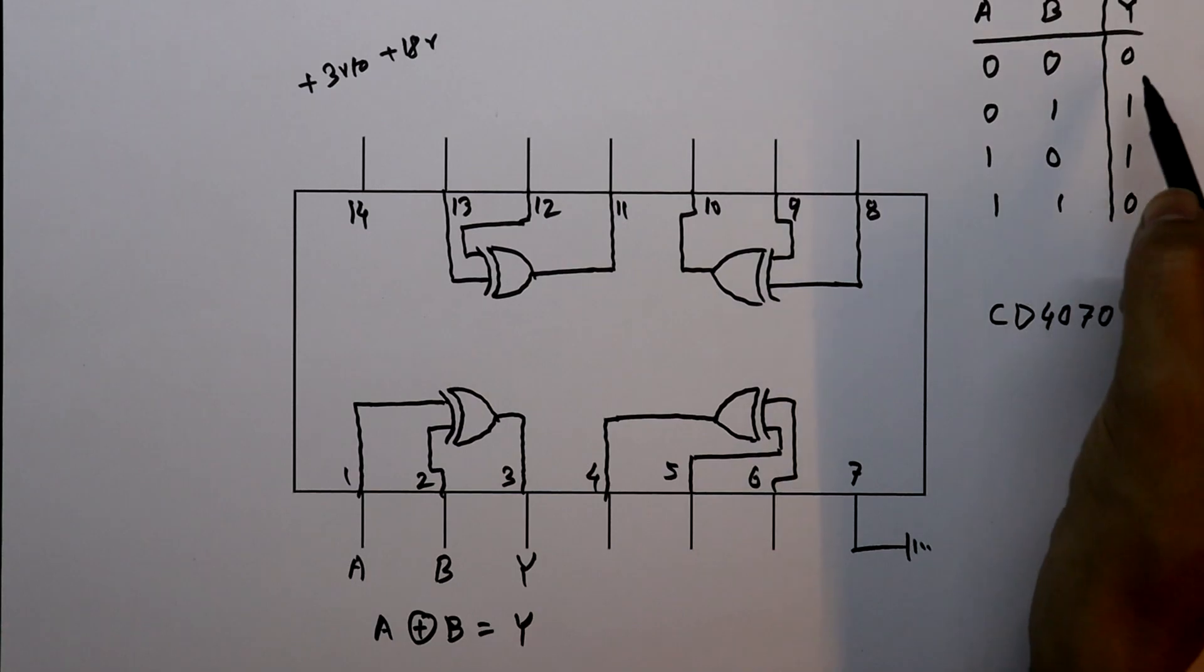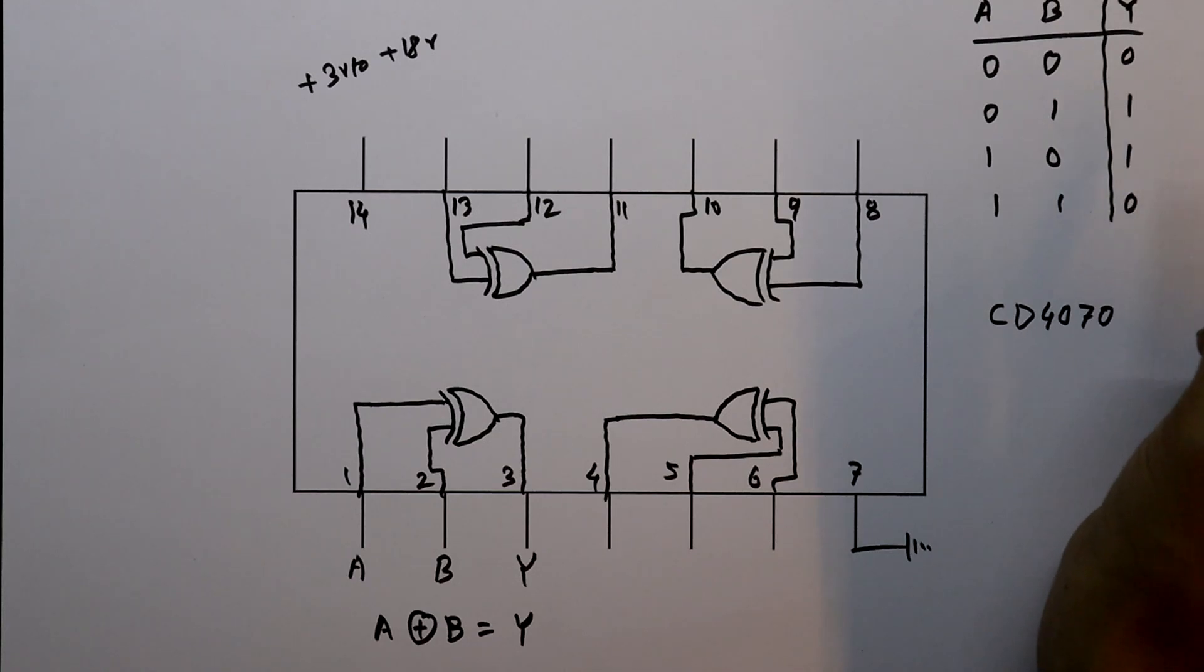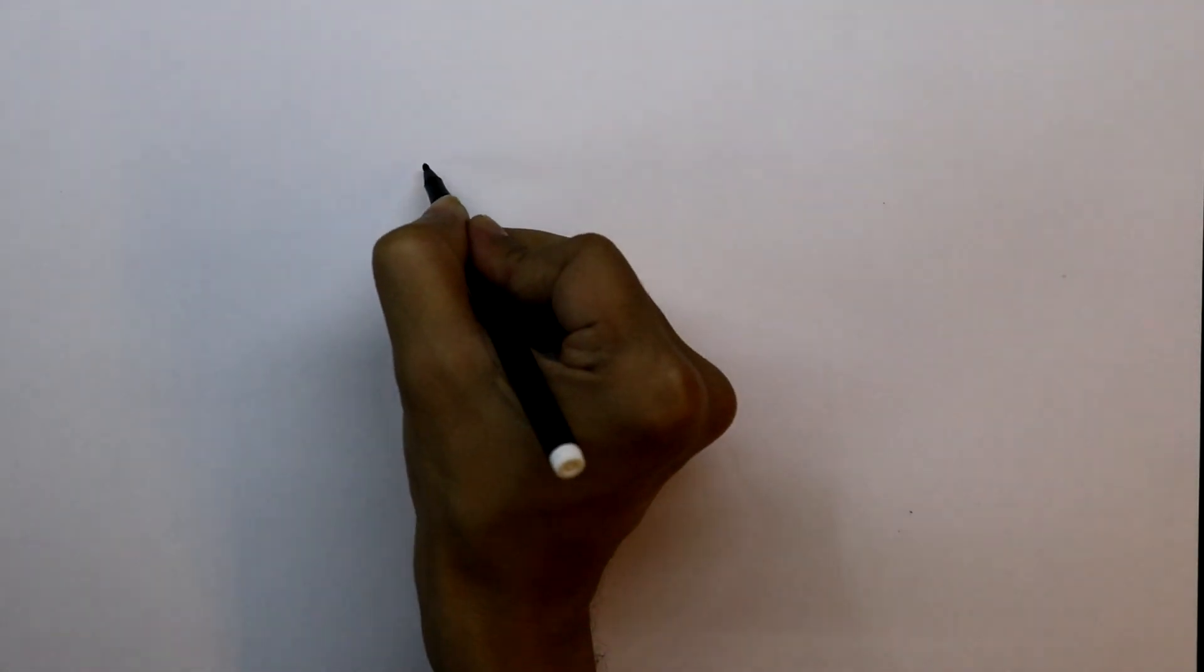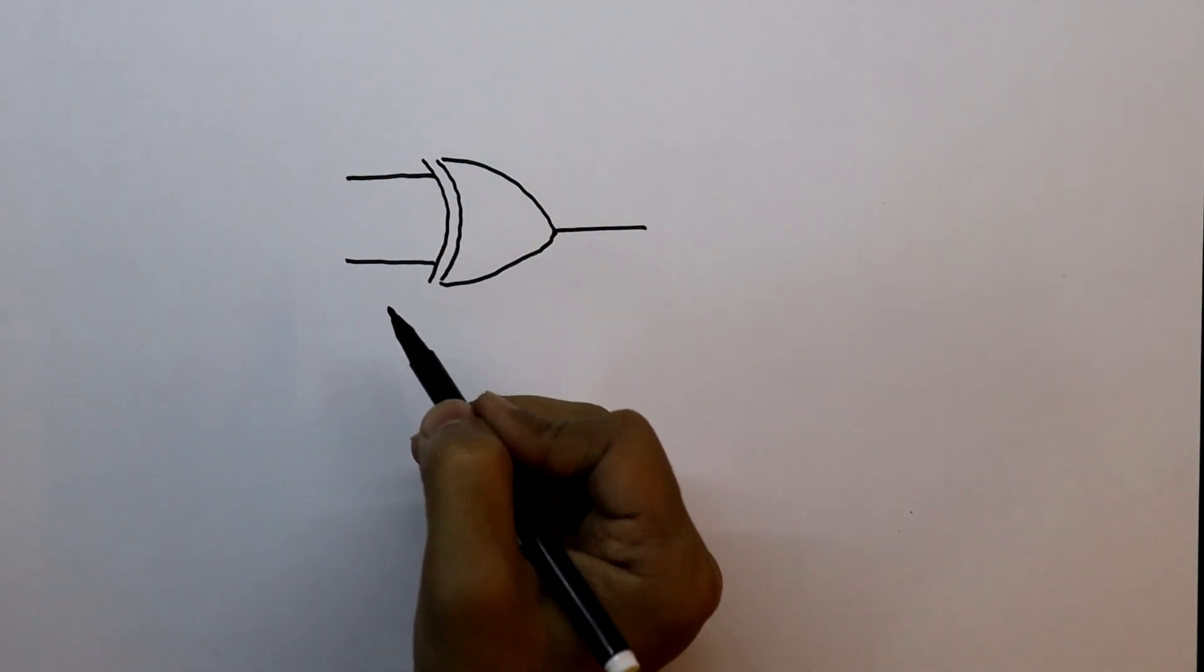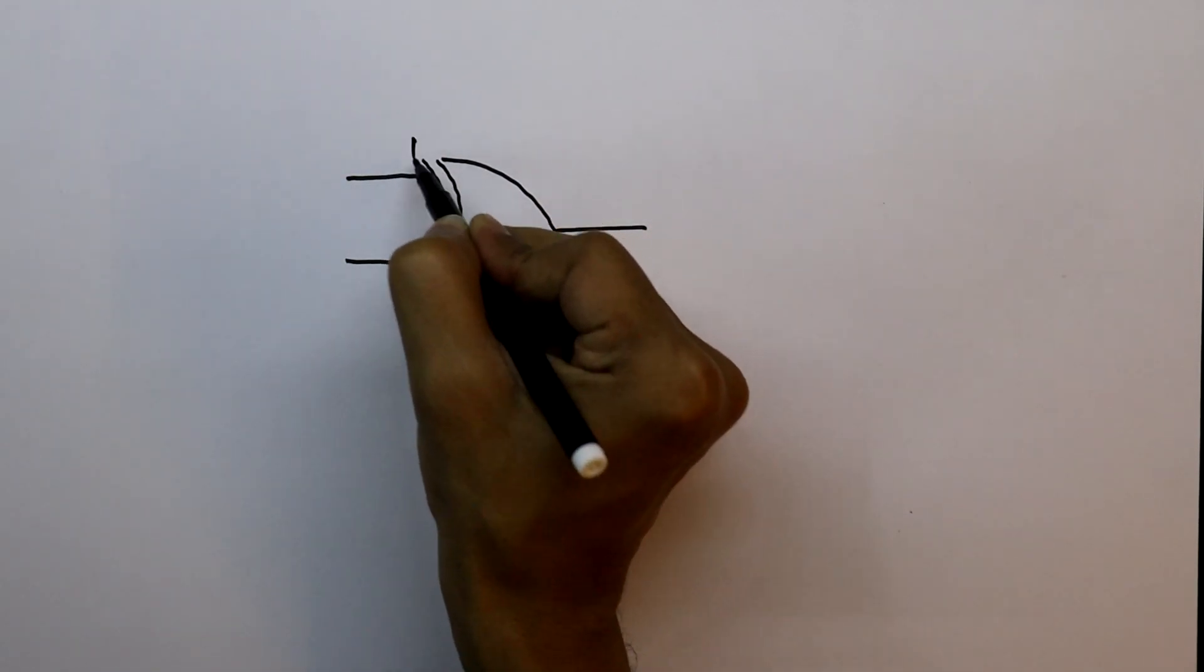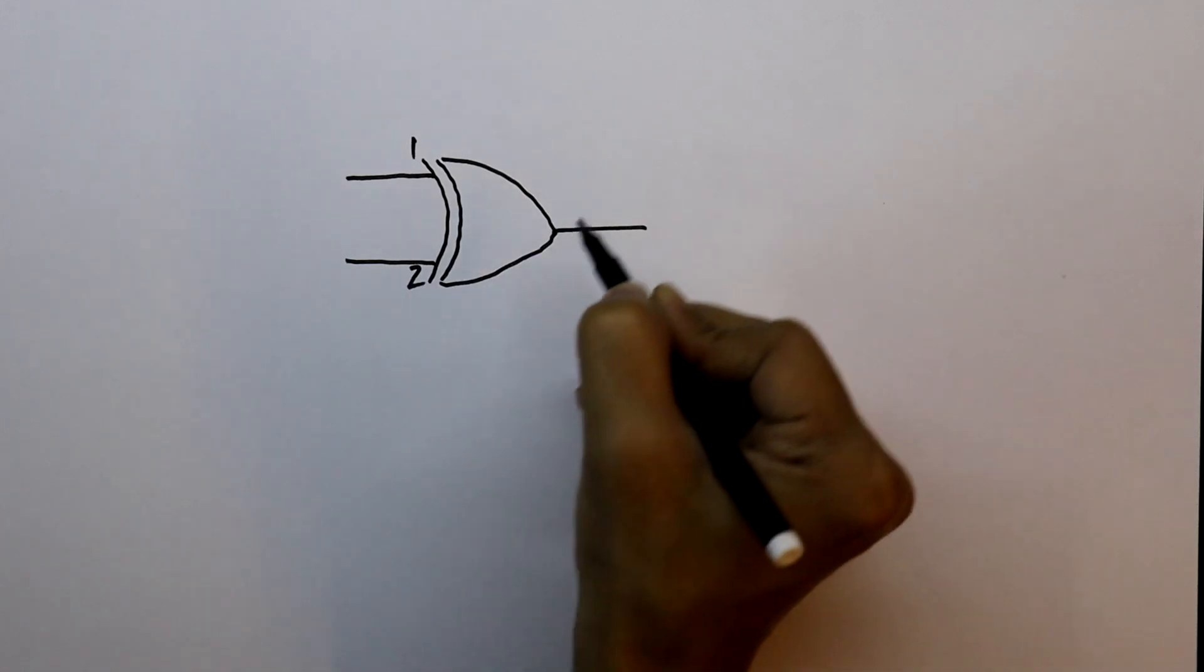If the inputs are the same, then we will get 0. And whenever the inputs are different, then we will get 1 as an output. So this is the XOR. For the practical, we will use gate number 1. Gate 1 means pin number 1, 2, and output is 3.